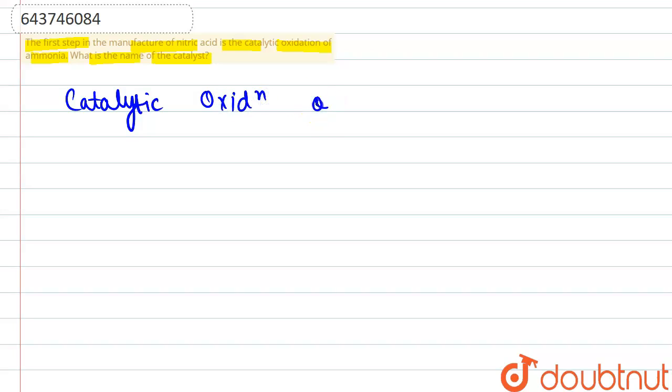And in this case, the catalyst that is used to fasten the rate of the reaction is platinum. Okay, so platinum is the answer. Now for better understanding, we will have a look at the reaction also.